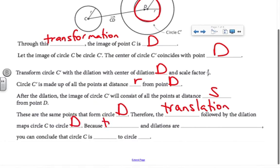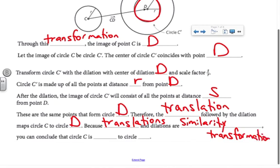Because translations and dilations are similarity transformations, you can conclude that circle C is similar to circle D.